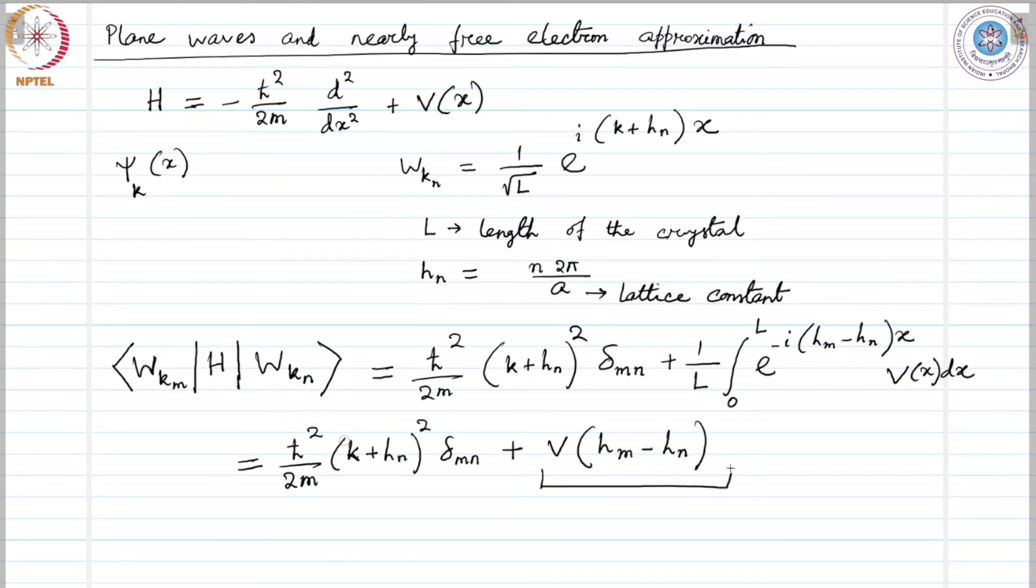So, this is a new quantity that we have introduced which is nothing but this quantity. And so what does it mean? v h denotes the fourier transform of v x. That is what it means.